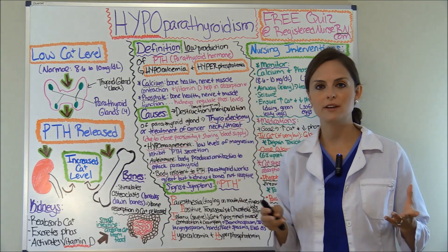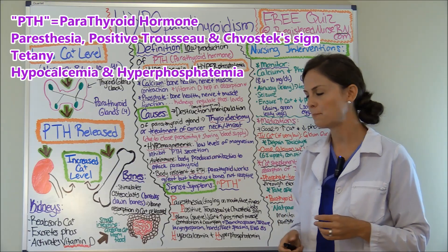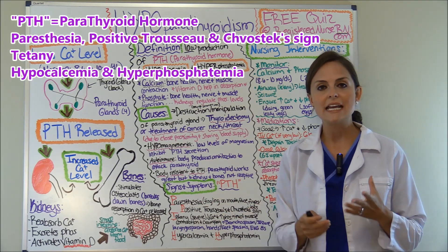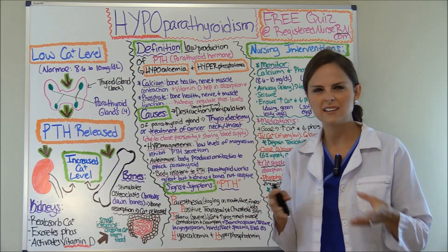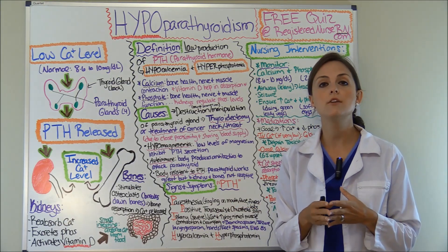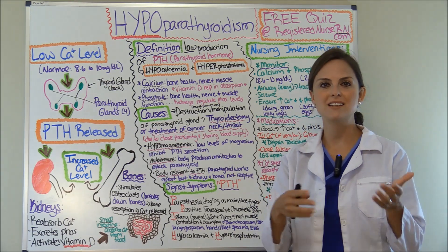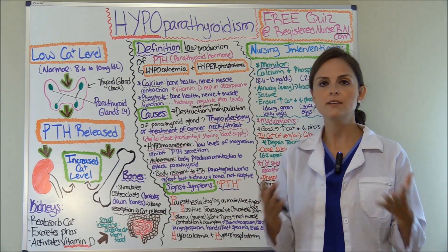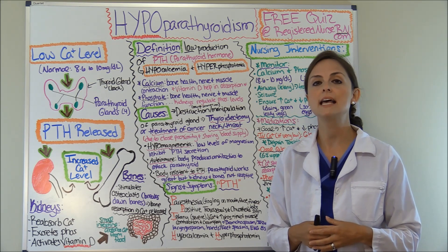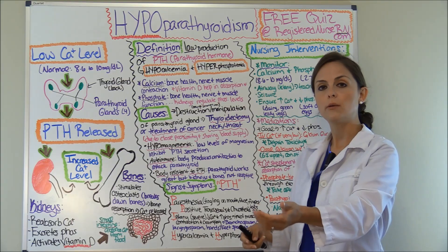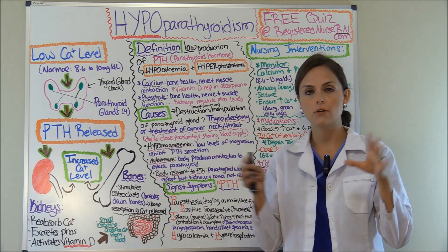To simplify the signs and symptoms, remember the mnemonic PTH. The first P is paresthesia — tingling of the mouth, lips, face, or fingers; the patient will complain of tingling and numbness. The other P is a positive Trousseau sign or Chvostek sign. For Trousseau's, you place a blood pressure cuff on the upper arm, inflate it above systolic, hold it for about three minutes, and if calcium is low the hand will involuntarily contract — the patient isn't doing this themselves.